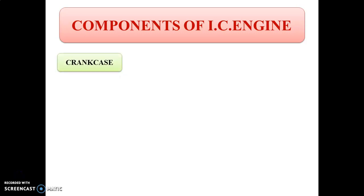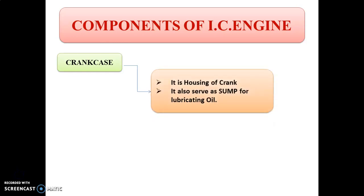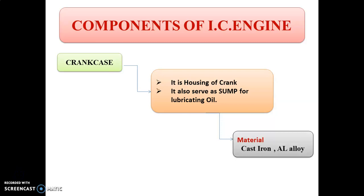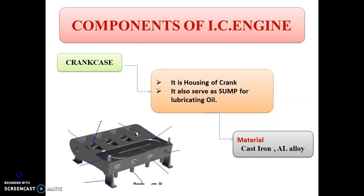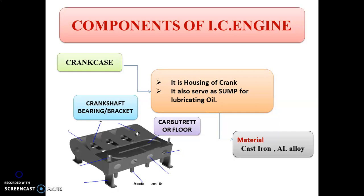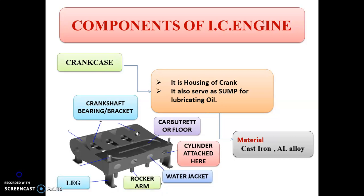The next main component is the crankcase. It is the bottom portion of the internal combustion engine and holds the cylinder and the crankshaft. It is the housing of the crank and also serves as a sump for the lubricating oil. The material for the crankcase is cast iron or aluminium alloy. The figure shows the crankcase for internal combustion engine having different parts like crankshaft bearing, carburetor floor, cylinder, water jacket, rocker arm, radiator return, and cylinder bay.